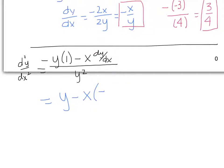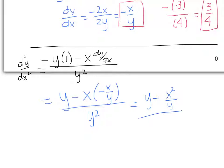Let's go ahead and make that substitution, dividing by y squared. When we simplify, we get y minus x times (negative x over y), which gives us y minus negative x squared over y — and a negative negative makes it a plus — so we have y plus x squared over y, all divided by y squared.